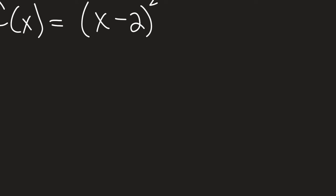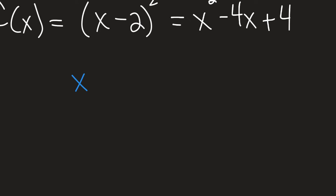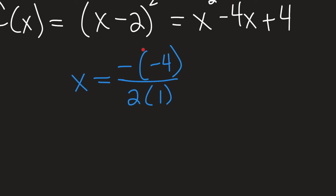Let's look at an example quadratic. Notice it's not in standard form — it's in factored form, with something in parentheses. So we're going to write it in standard form first so we can use all our formulas. Squaring everything out gives X squared minus 4X plus 4 as our quadratic in standard form, because your A, B, and C values come from standard form, not any other form.